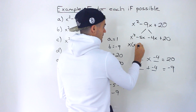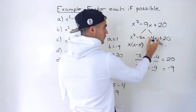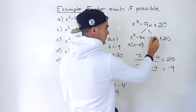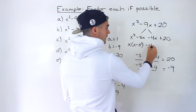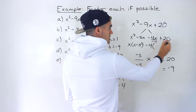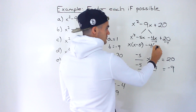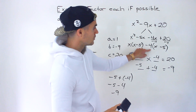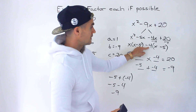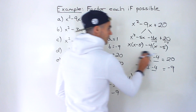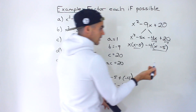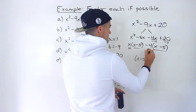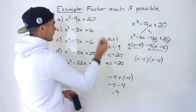We found the two numbers, and the same process applies — we decompose that B value into those two numbers and then factor by grouping. From the first two terms you take out an x, giving x minus 5. From the last two terms, since this value is negative, you're always taking out a negative value. We take out negative 4 from negative 4x and positive 20. Dividing by negative 4 leaves us with x minus 5 inside the bracket. Then we take out that binomial common factor (x minus 5), leaving x minus 4.